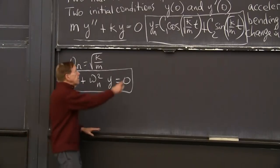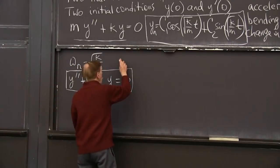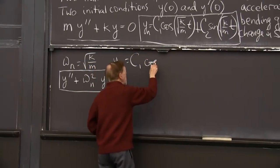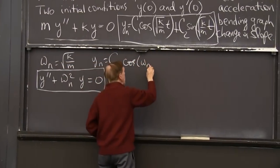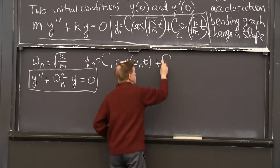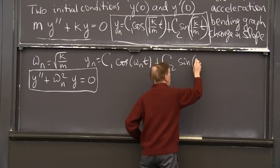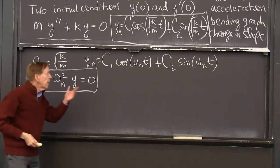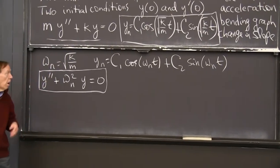And the solutions then, I'll just copy this solution: y_null is c1 cosine of omega_n t, because omega_n is that square root, and c2 sine of omega_n t. Oh, well, wait a minute. Well, I can figure out what c1 and c2 are.